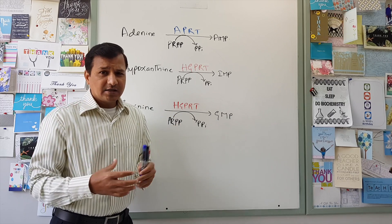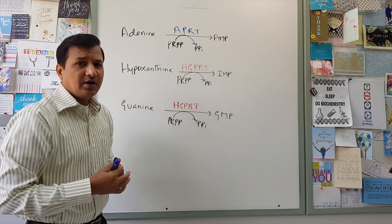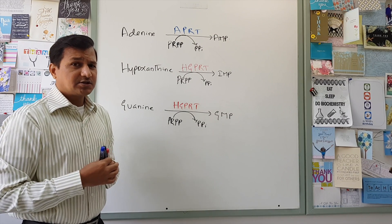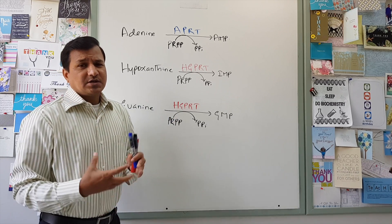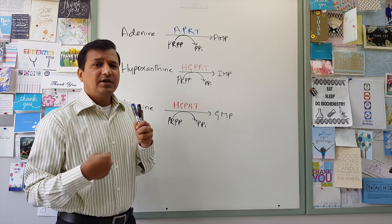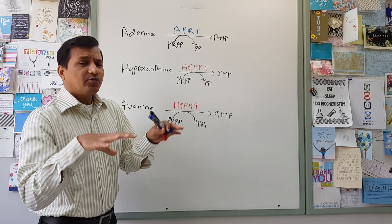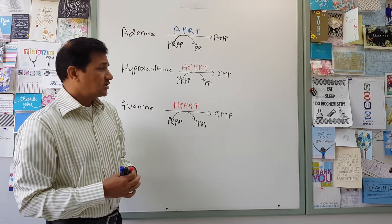Now, the Lesch-Nyhan syndrome is because of complete absence of HGPRT enzyme, hypoxanthine-guanine-phosphoribosyl transferase enzyme. So there is a partial deficiency. Partial deficiency of HGPRT will give rise to Kelley-Seegmiller syndrome, which is a relatively milder disorder. But what we will talk about now is more on Lesch-Nyhan syndrome.